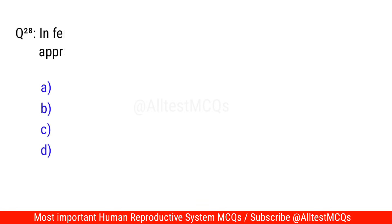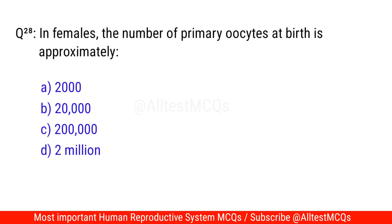Question No. 28: In females, the number of primary oocytes at birth is approximately? The correct option is D. Two million.